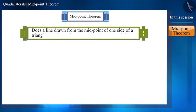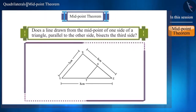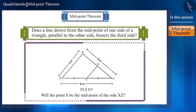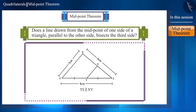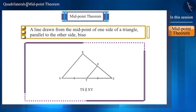Will the converse of this theorem also be true? Does a line drawn from the midpoint of one side of a triangle parallel to the other side bisect the third side? Friends, you can perform an activity for this. In triangle XYZ, side YZ is 8 cm, side XZ is 6 cm and side XY is 5 cm. Point T is the midpoint of side YZ. You will see that point S is the midpoint of side XZ, and the length of line segment TS is half the length of side XY. You can repeat this for other triangles and conclude that the converse of the theorem is also true: a line drawn from the midpoint of one side of a triangle parallel to another side bisects the third side.